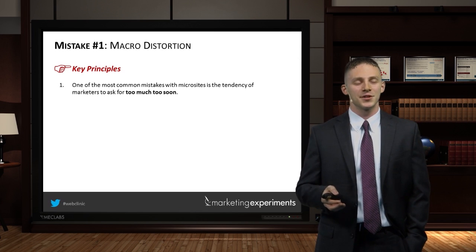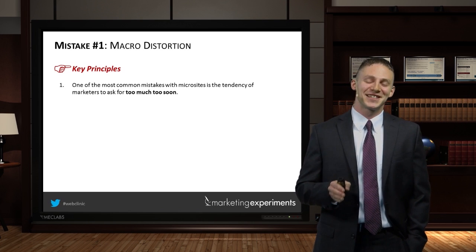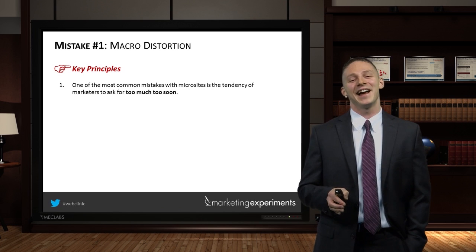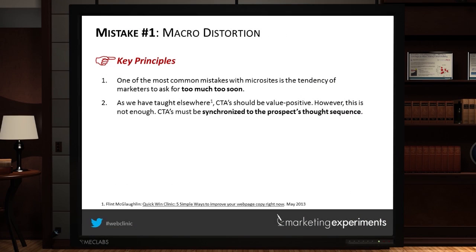Or do what my wife does. Instead of telling me I was a bad dresser, she would send me clothes and say, 'Look at these new clothes I have for you,' and I would eventually conclude I needed to step it up. As we've taught at the Optimization Summit and in past clinics, you need a value-positive call to action — but it's not enough. You can't just go through microsite design and say 'we've got a call to action, we're good.' Call to actions must be synchronized with the prospect's thought sequence.